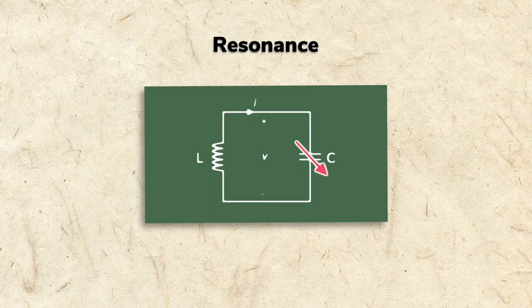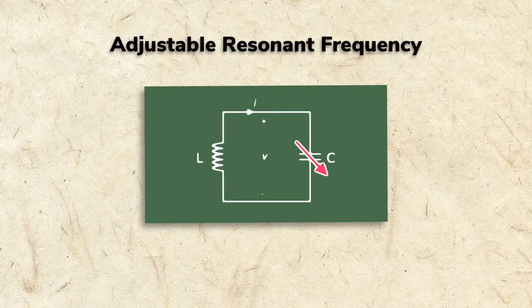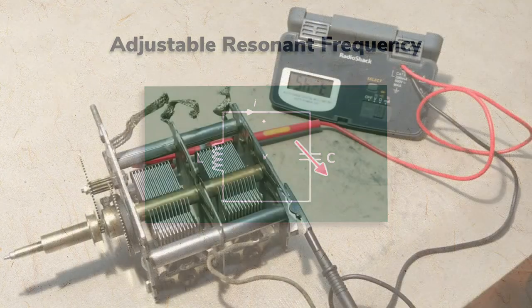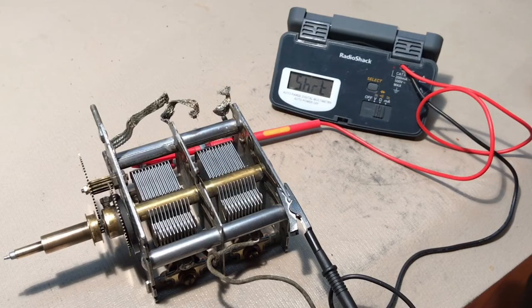Because the capacitors are variable, the resonant frequency can be changed. Variable condensers generally work fine in antique radios, but sometimes the metal plates will be bent, causing a short. This is easily repaired by carefully straightening the plates.